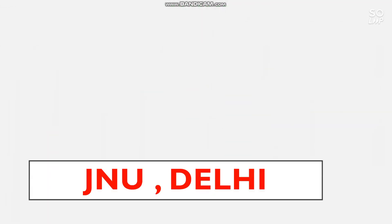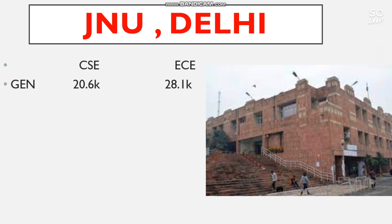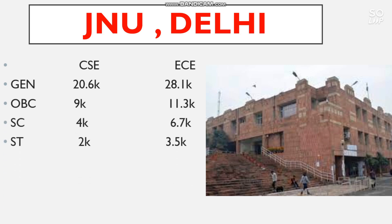Number 6 is JNU Delhi. Cutoff for CS and EC: General — CS 20,600, EC 28,100; OBC — 9,000 and 11,300; SC — 4,000 and 6,700; ST — 2,000 and 3,500; EWS — 4,000 and 5,700.